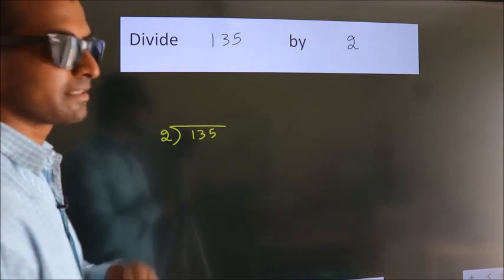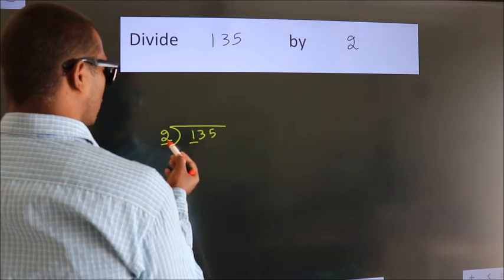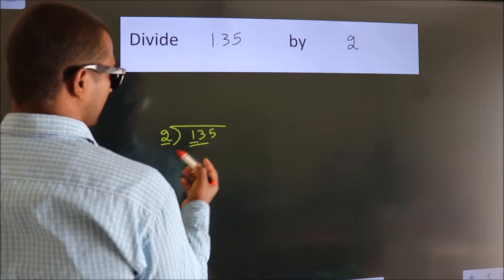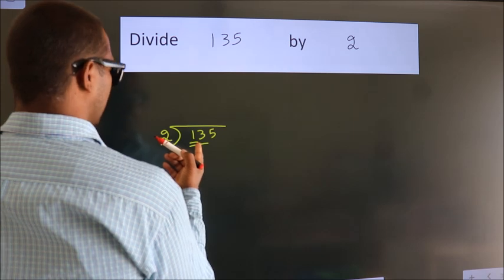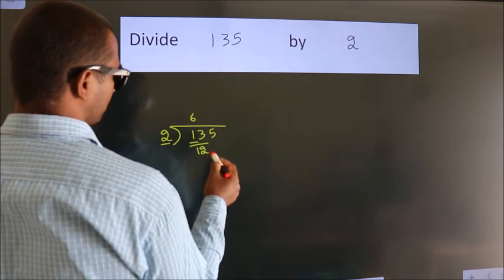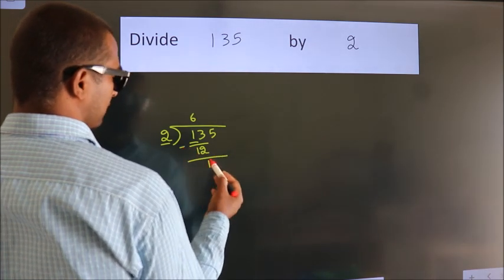Next, here we have 1, here 2. 1 is smaller than 2, so we should take 2 numbers: 13. A number close to 13 in the 2 times table is 2 times 6 equals 12. Now we subtract and get 1.